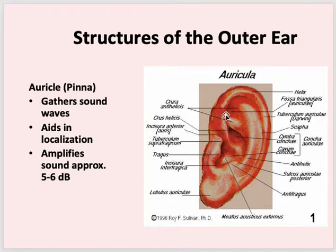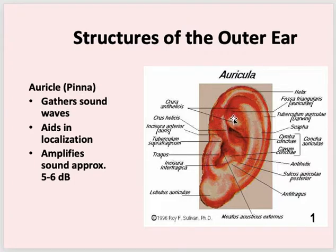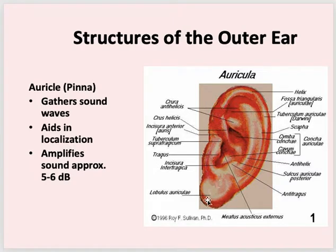They are showing the external layer of the pinna. There are a lot of names — almost everything has a name — but not all are important to remember. Some are important so you know location when taking history. For example, this is the helix, this area is the triangular fossa, this one is the antihelix, then there is the tragus, the concha, and this is the ear lobe.